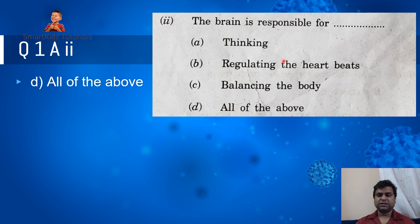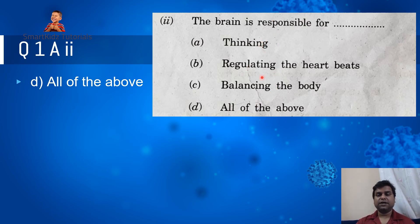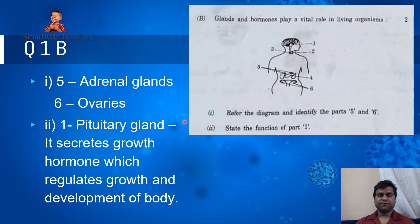Next question: the brain is responsible for — the choices are thinking, regulating the heartbeats, balancing the body, and all of the above. It is not a difficult choice because the brain is responsible for thinking, it also regulates the heartbeat, and it is also responsible for balancing of the body. So the correct choice would be D: all of the above.